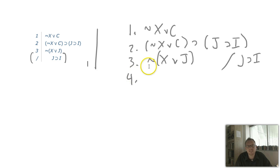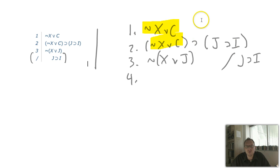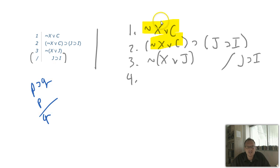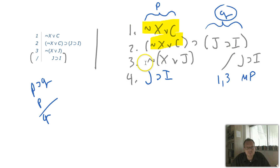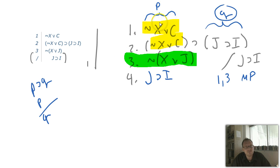Let's take a look at this problem. Notice that this and this are the same thing, which means we can use modus ponens. Remember, modus ponens says if you have P then Q and you have P, you can conclude Q. This thing right here is our P and this is going to be our Q, which means we can conclude Q. So line four is going to be J then I — lines 1 and 3, modus ponens.